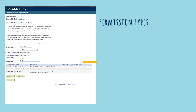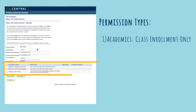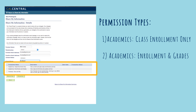There are three different permission types. The first is Academics, Class Enrollment Only. A delegate is permitted to view current and past class enrollments online. The second is Academics, Enrollment and Grades. With this permission type, a delegate can view class enrollments as well as grades online.